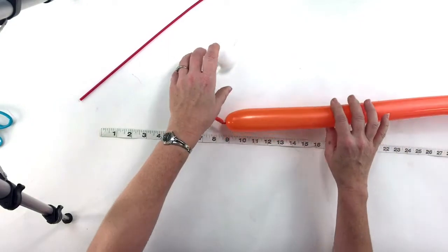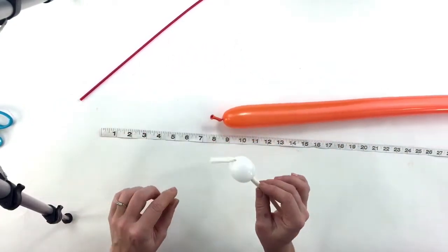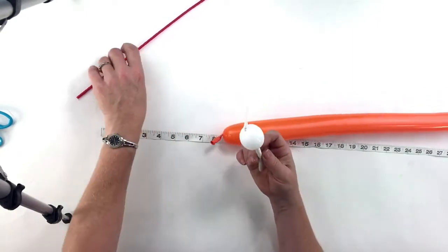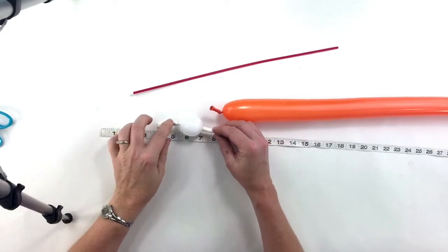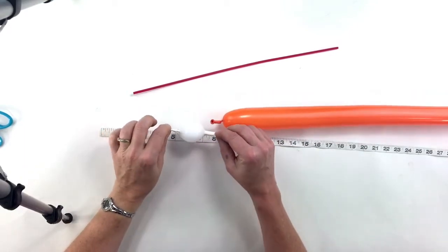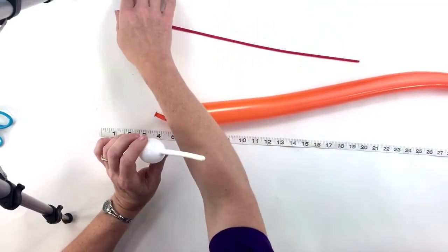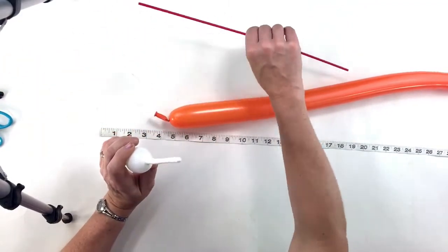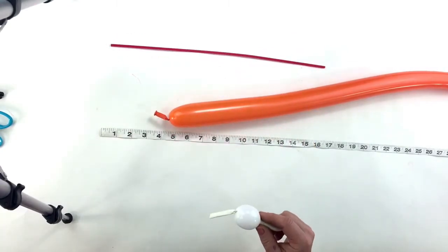Then we're going to take a one and a half inch bubble for the eyes, a white scrap piece of 260 that you can inflate an inch and a half. I'm going to put mine on a stick just to show you how to put it on the stick. These are the 16 inch sticks from Brody's.